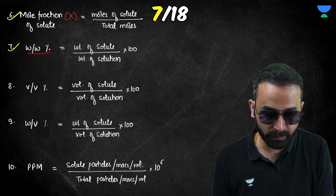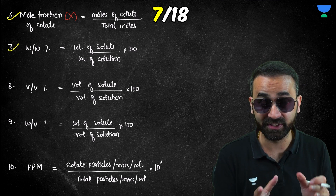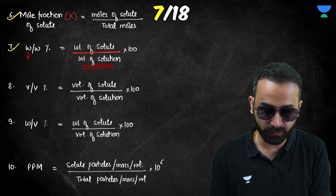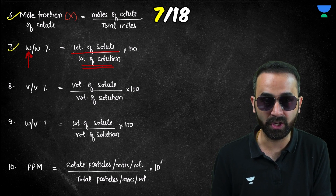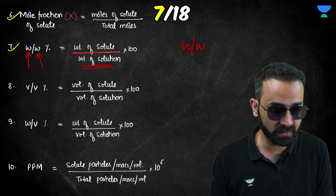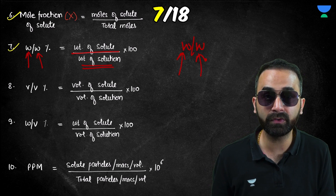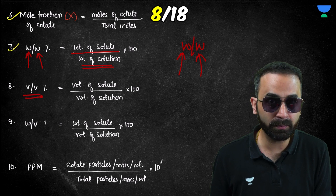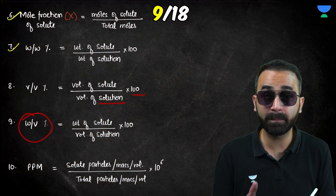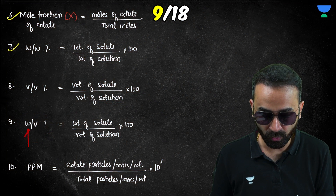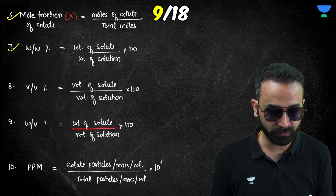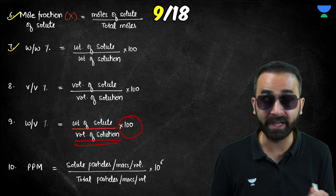Formula seven is weight-by-weight percentage, also called mass percentage: weight of solute divided by weight of solution, multiplied by 100. The first term is always about the solute and the second about the solution. For volume-by-volume percentage, it is volume of solute divided by volume of solution times 100. For weight-by-volume, it is weight of solute divided by volume of solution times 100.